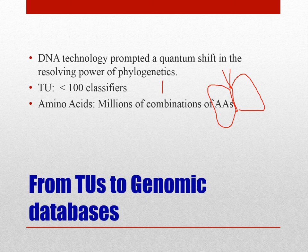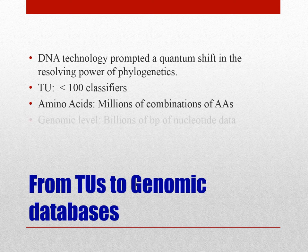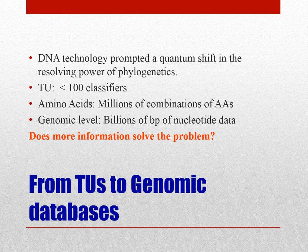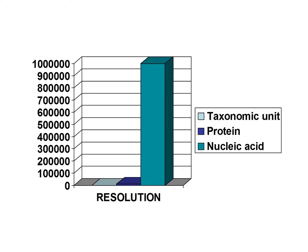This also leads to the concept of cryptic speciation, in which species that look physically similar may have molecular differences at the nucleotide or gene level. We currently have billions of bases of nucleotide data at GenBank. This brings us to the philosophical question: does more information solve the problem, or does it lead to more confusion? This is one of the factors which will be constantly evolving and needs to be addressed as the data evolves.